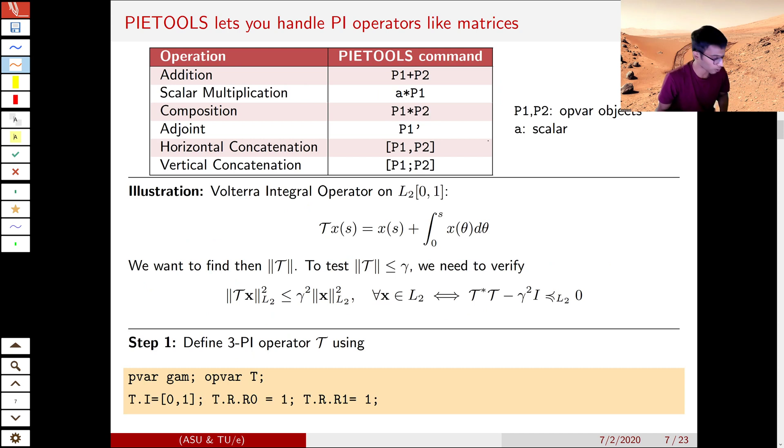Once we store or define this PI object or OPVAR object, we can do operations like addition, composition, adjoint using simple commands that are exactly the same as the ones used for matrices. You can even concatenate them or stack them in any order as long as the dimensions agree, just like we define block matrices in MATLAB. We can do that for PI operators too.